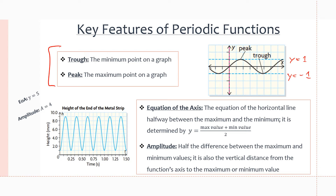Next we have the equation of the axis, which is the horizontal line that cuts straight through the middle of the periodic function, right between the maximum and minimum values. The formula is: y = (max value + min value) ÷ 2. Lastly, the amplitude is half the difference between the maximum and minimum values — it is the distance between the axis and the maximum or minimum value of the function.